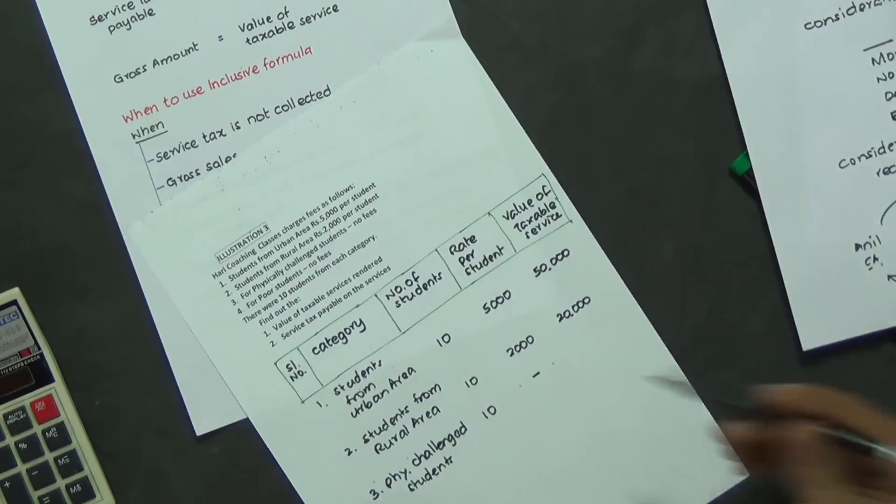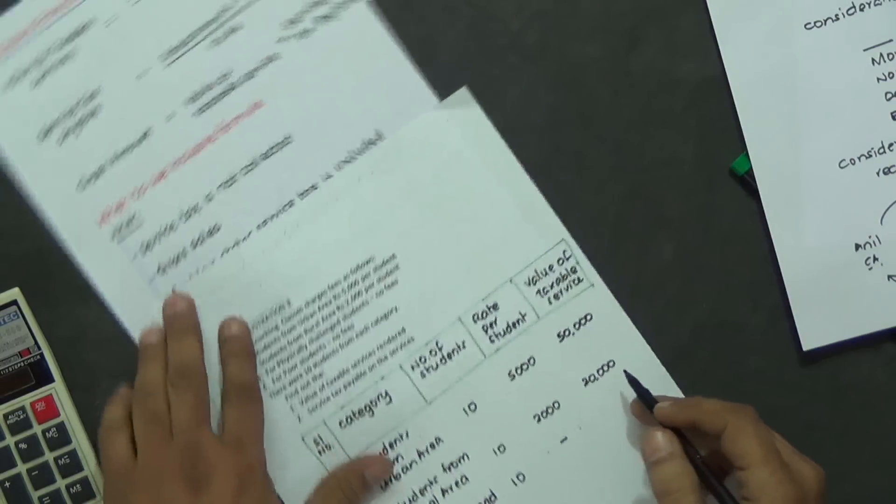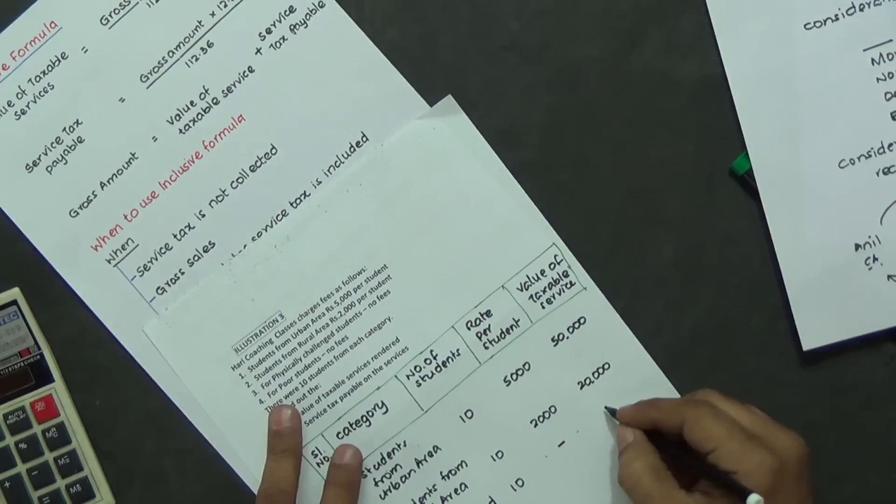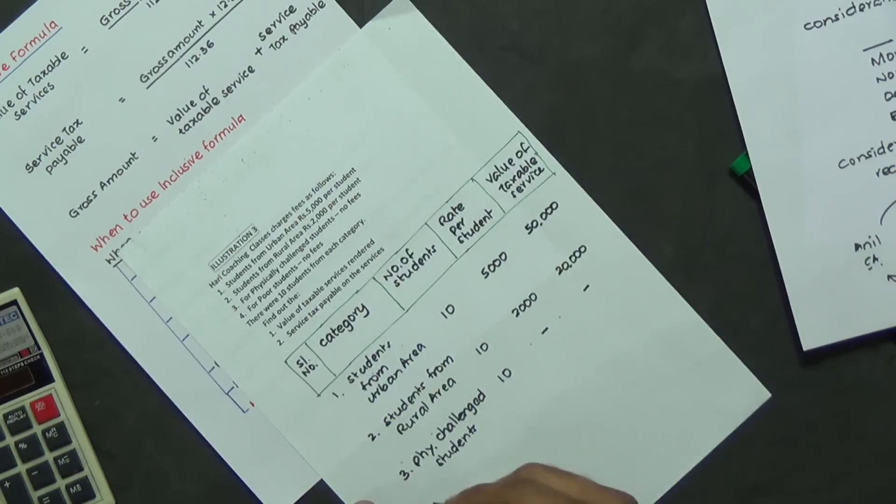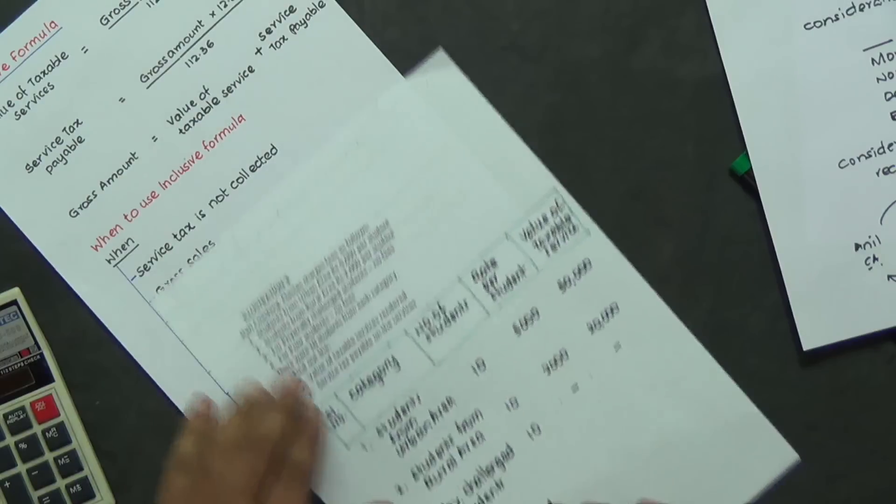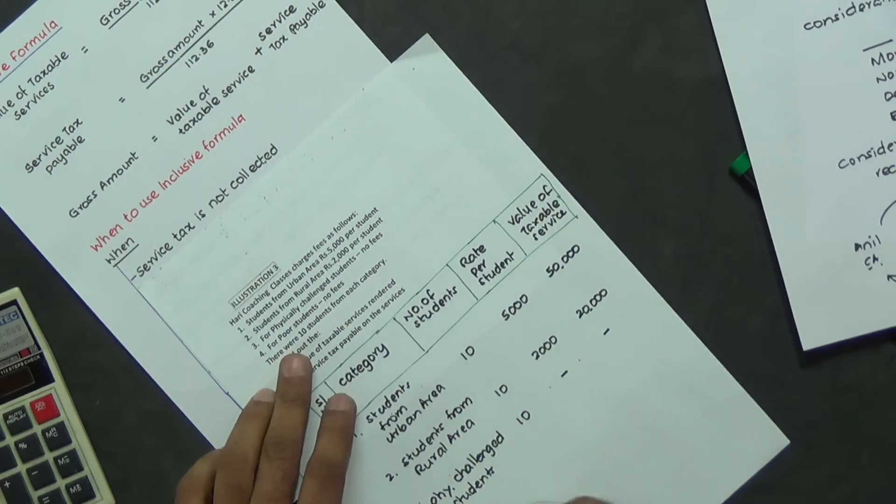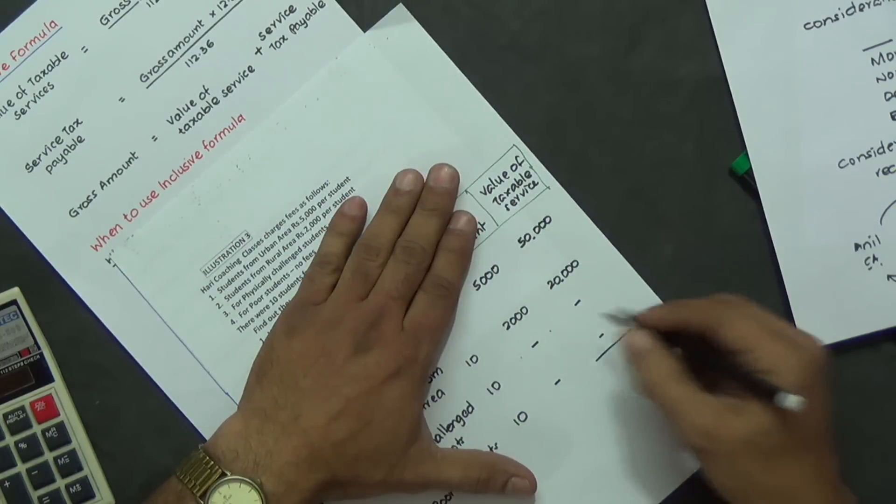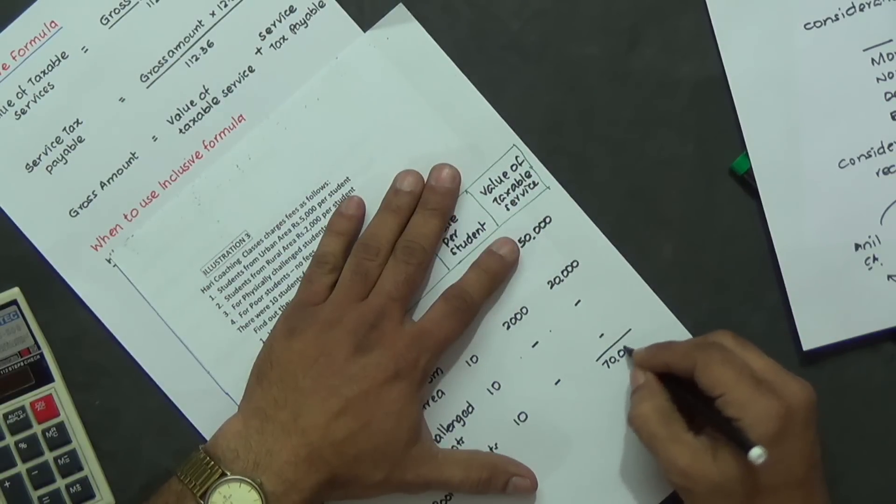So coming back to this sum, there is no consideration. Physically challenged students, no fees, no consideration, so not a taxable service. Category 4, for poor students, again, 10 students, no consideration, not a taxable service. Totally, we have 70,000 rupees.